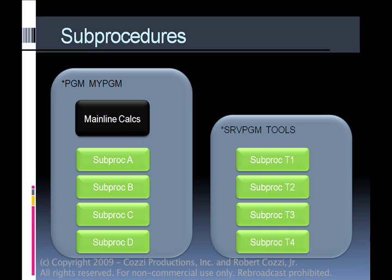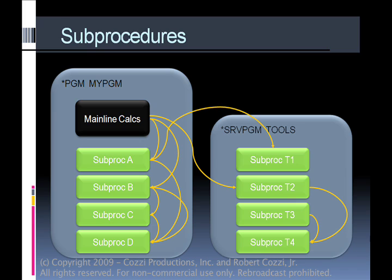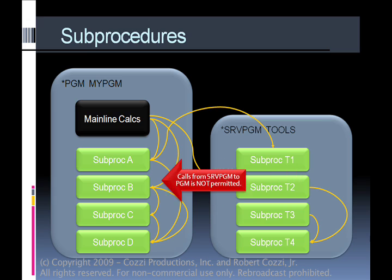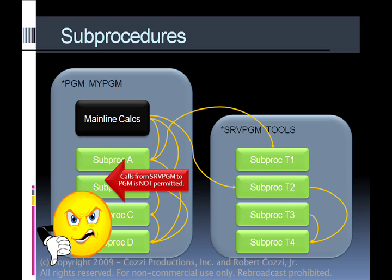You can also store subprocedures in service programs, and when you do that you can still call into the subprocedures from the mainline calcs. Since subprocedures can call other subprocedures inside the service program, subprocedure T2 can call T4 and T3 can call T4. This gives you the ability to extend RPG by packaging things in a service program. You can call from the mainline calcs or a subprocedure in your own program to a subprocedure inside a service program — that's okay. But calling from the service program back to a subprocedure in your program, that's not okay.